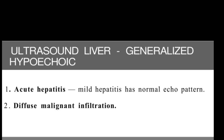So in acute hepatitis, there will be generalized reduced echogenicity of the liver. The second differential is diffuse malignant infiltrative process, where the liver parenchyma will also appear hypoechoic. In that condition, you will have a history of malignancy and other investigations available. Keeping all that in view, you have to determine whether this hypoechogenicity is due to a disease process, a malignant process, or acute hepatitis.